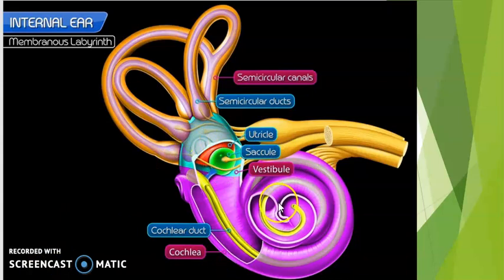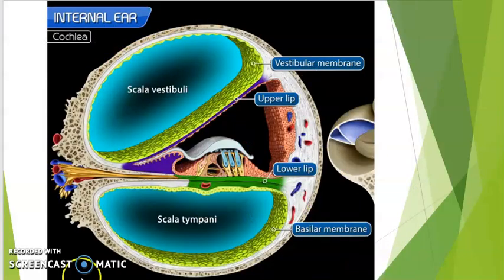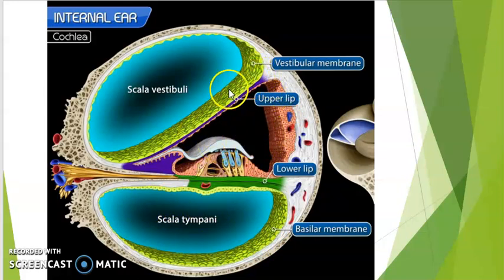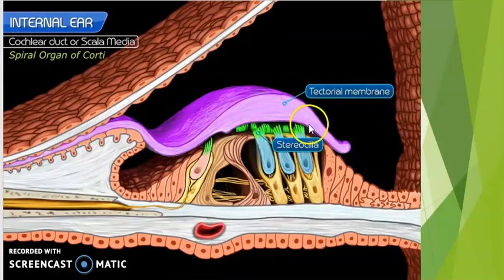Now let's see the hearing portion in detail. The cochlea can be divided into three segments. There is a cochlear duct going through the middle, then an upper portion and a lower portion. The upper part is known as scala vestibuli and the lower part is known as scala tympani. The middle portion is the scala media. There is a vestibular membrane which separates the scala media from the scala vestibuli, and a basilar membrane which separates the scala tympani from the scala media. The scala media consists of hair cells, organ of corti, and tectorial membrane.